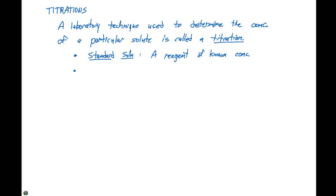The second main component of a titration is a solution of unknown concentration. And the objective of the titration is to determine that unknown solution's concentration.